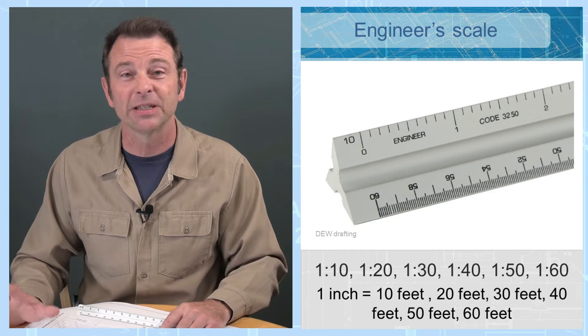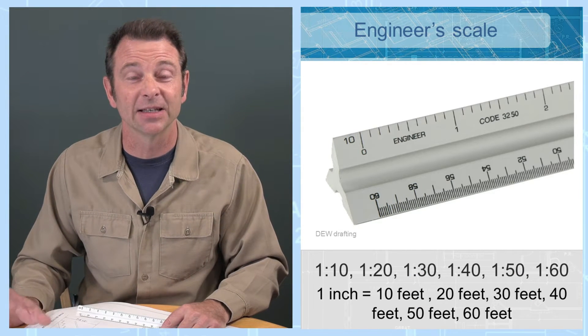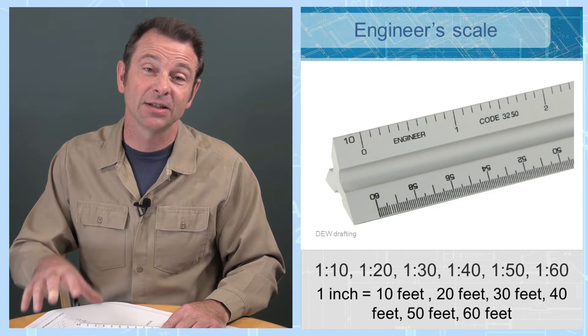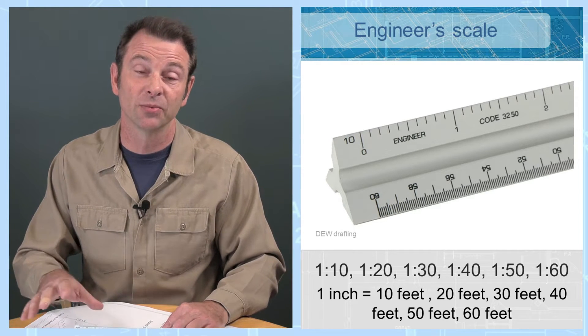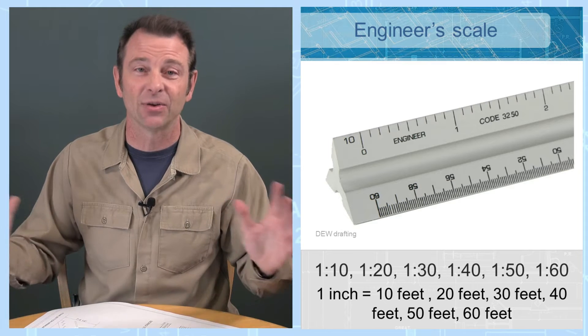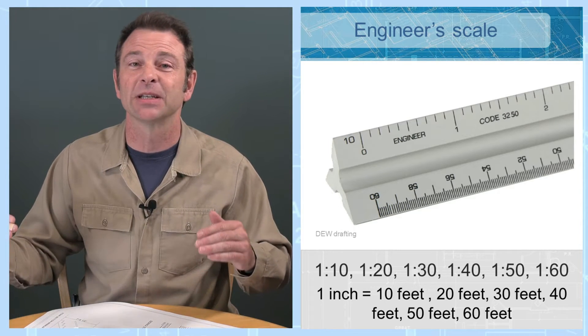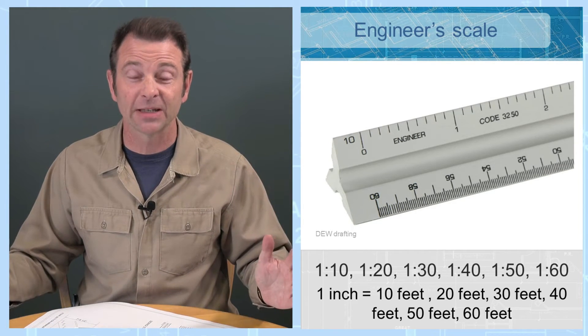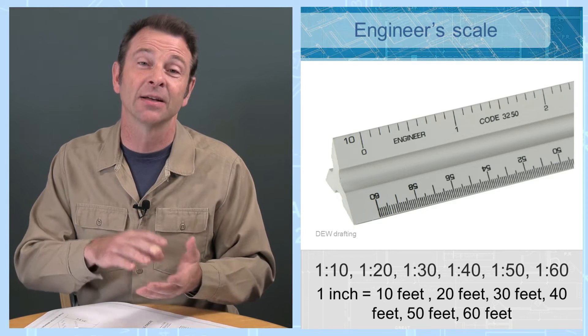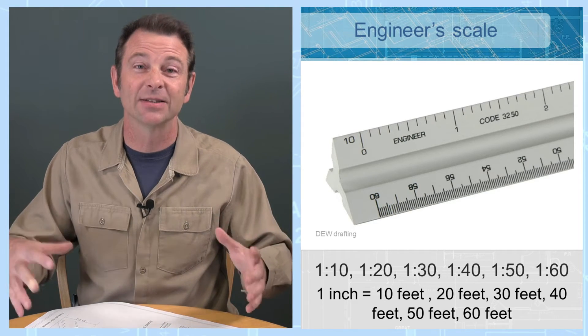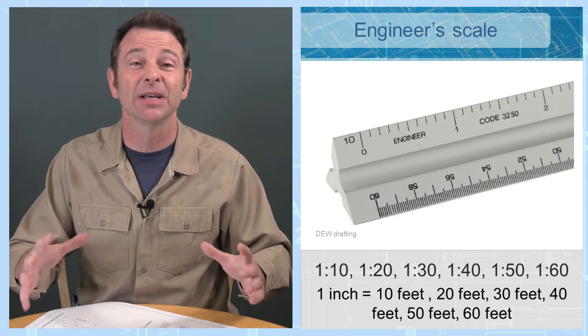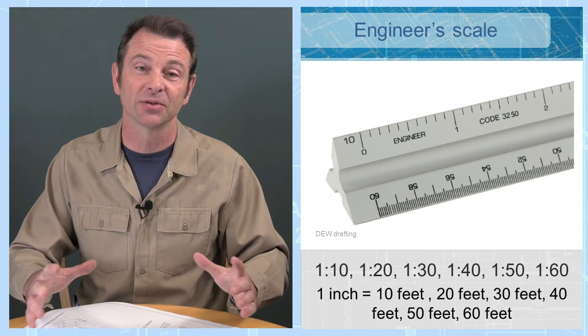Each drawing should be spelled out to a different engineer scale. An engineer scale would be a tool that you would use if you're measuring outside. Typically, these measurements are much larger measurements, longer measurements. An architect scale is used when it's related to the building, so that would typically be used inside of a built structure.